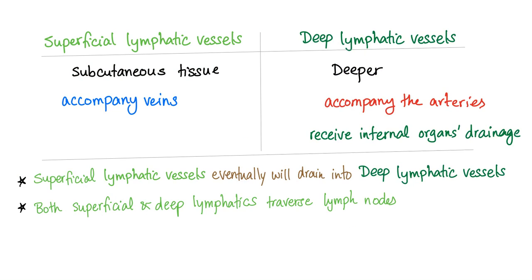We have two types of lymphatic vessels: the superficial, which are in the subcutaneous tissue and accompany the veins, and they drain into the deep lymphatic vessels. The deep ones accompany the arteries and receive drainage from internal organs. Both the superficial and the deep lymphatics traverse the lymph node.